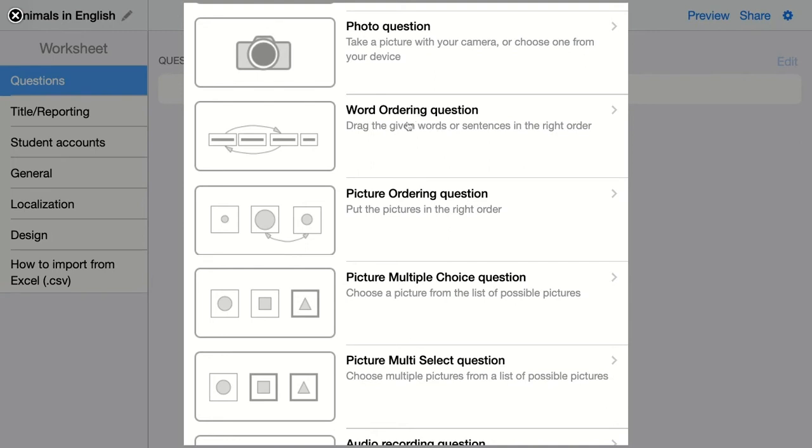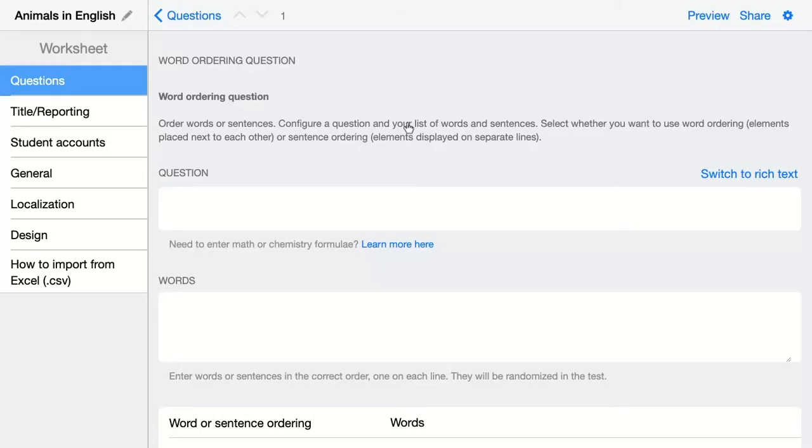Let's configure this question. First, I'm going to show you how they can order words. It is a different configuration than when they order sentences, but it's just one small step that makes a difference. I'm going to add my question here. Order the words and put together the sentence. And here I'm going to add the words they have to order to complete the sentence.